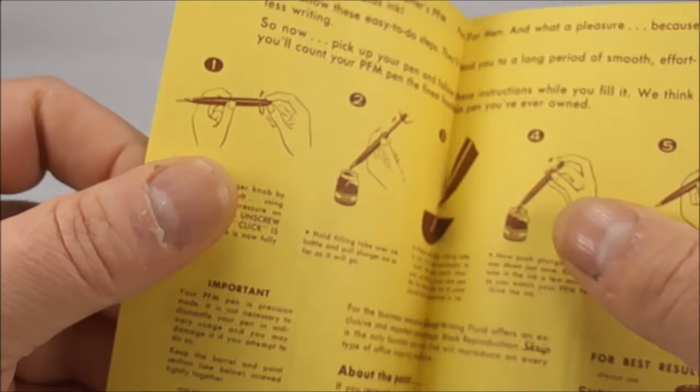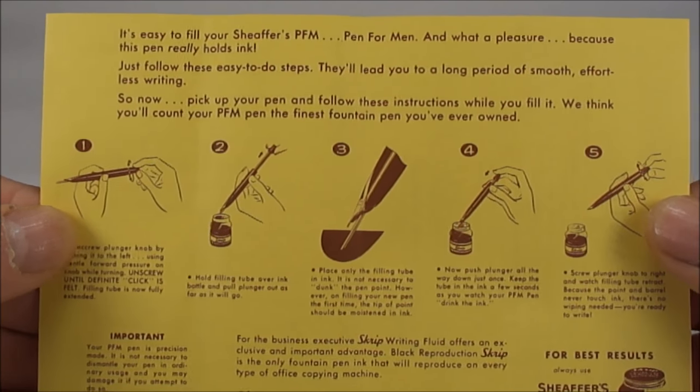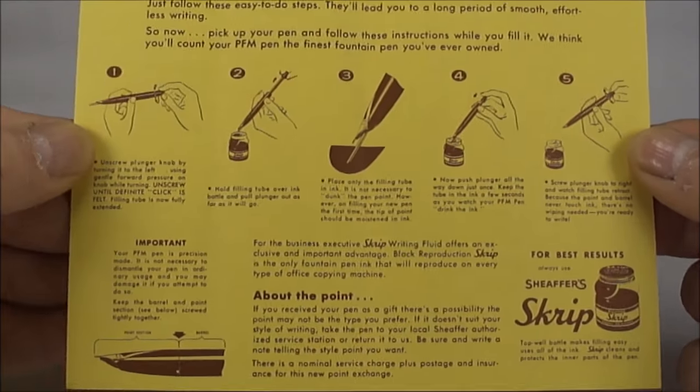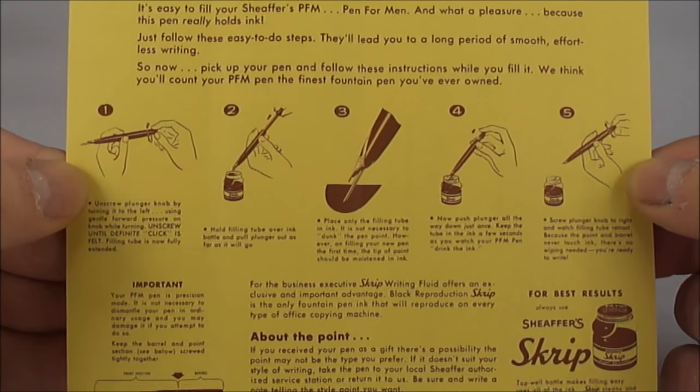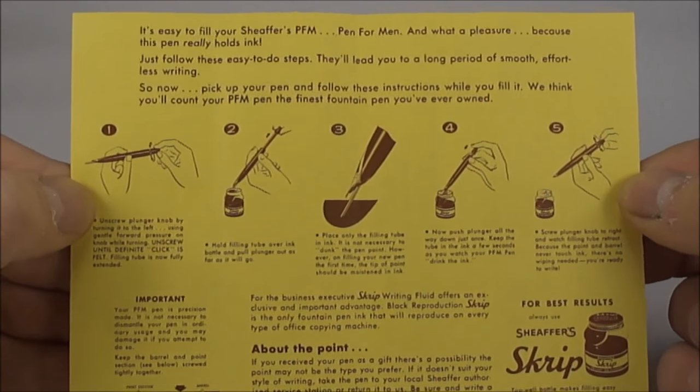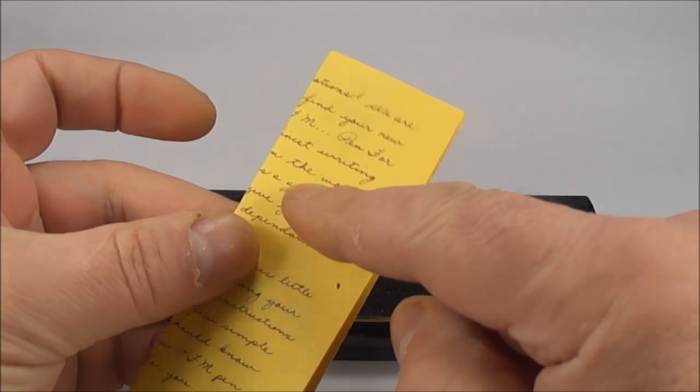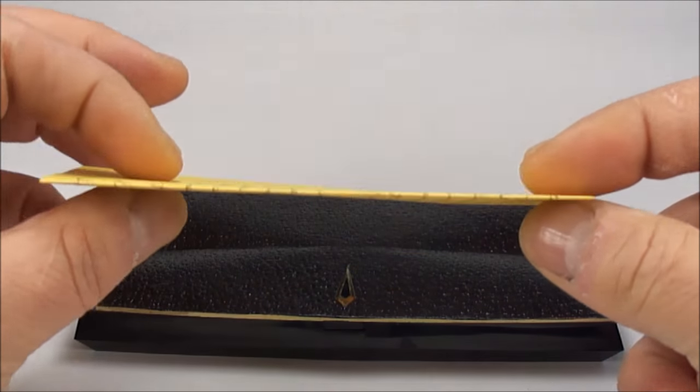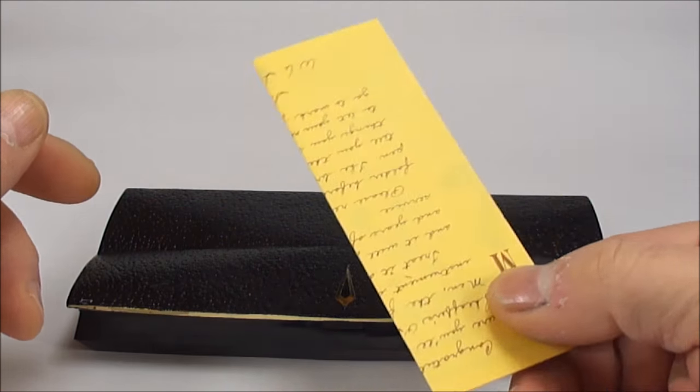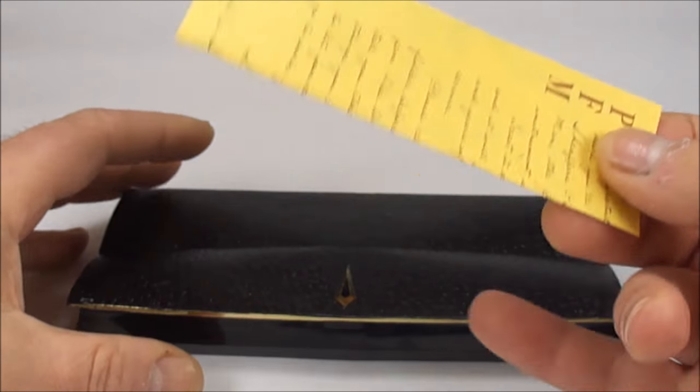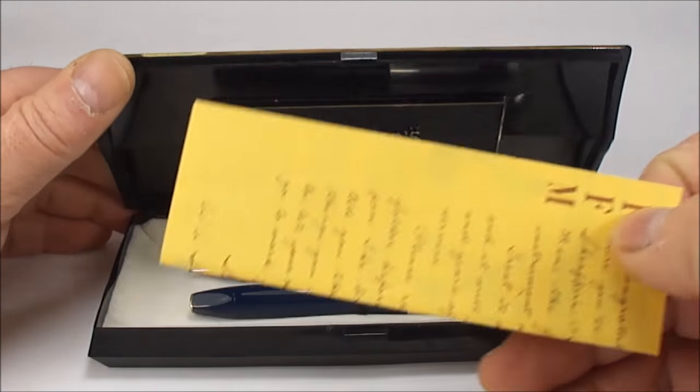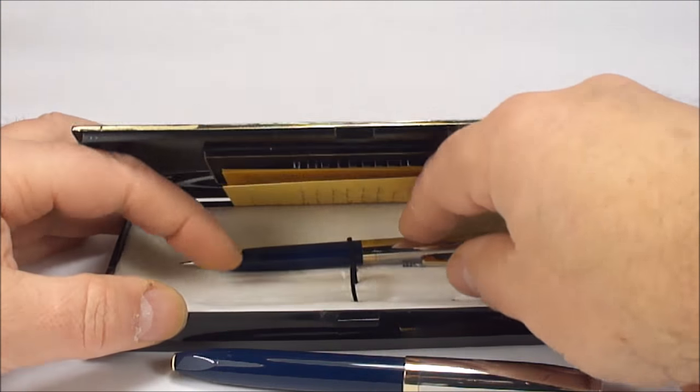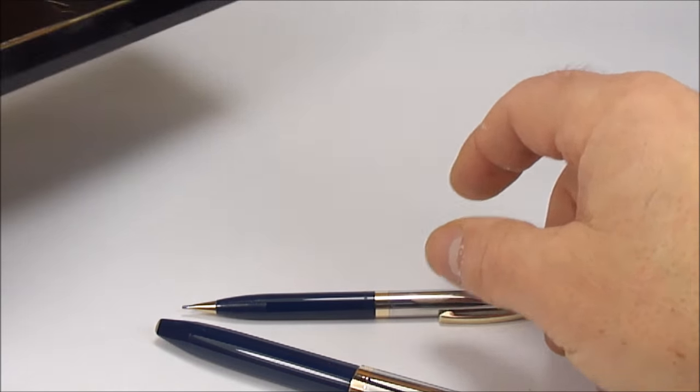If we open this up again, what we see is the original instructions as well. So it actually shows us how to fill your PFM fountain pen. Again, I believe it's very unusual, not particularly rare but unusual, to find the original case and the original instructions as well in such lovely condition. This instruction has been stored in this box ever since the pen was actually made. So let's pop it back, let's take the pens out and the pencil, and let's pop the case to one side.